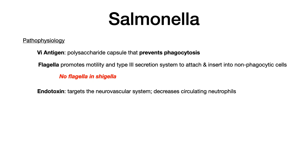Then you have the presence of a flagella. The flagella promotes motility, but it's also responsible for the evolution of a type 3 secretion system. This allows salmonella and other bacteria to attach to and insert bacterial contents into non-phagocytic cells. Importantly, shigella has no flagella — that's a big differentiating feature since salmonella and shigella can present very similarly.